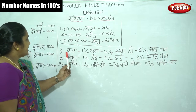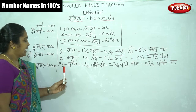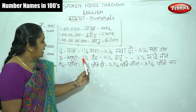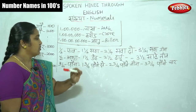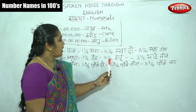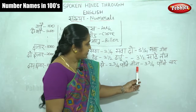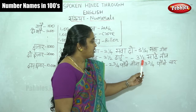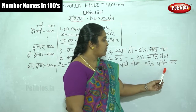Is it easy and understandable? One by four is Paav, one and one-quarter is Sava, one and one-half is Dedh, one and three-quarters is Paune Do. Two and one-quarter is Sava Do, two and one-half is Dhai, two and three-quarters is Paune Teen. Three and one-quarter is Sava Teen, three and one-half is Sade Teen, three and three-quarters is Paune Chaar.